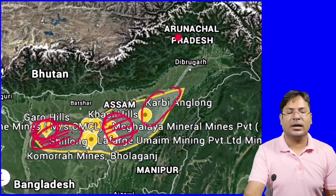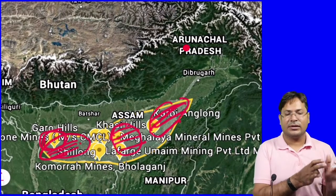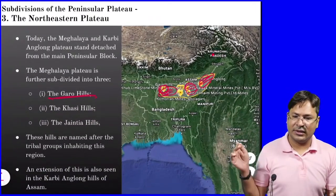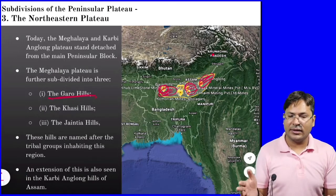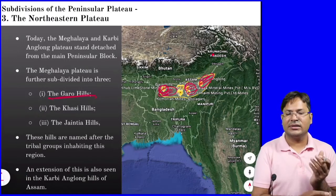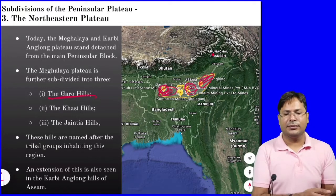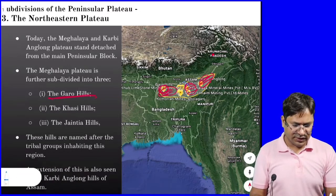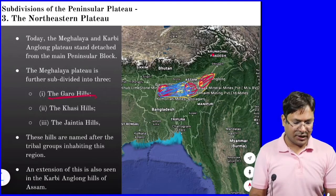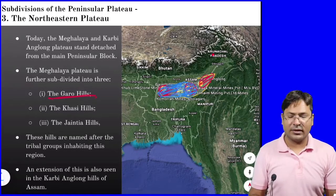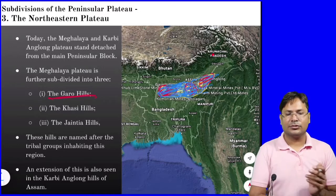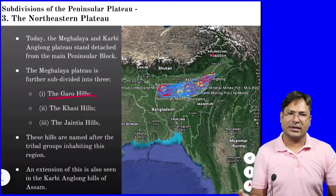This Plateau is mainly covered by three hills: in the west the Garo Hills, in the center the Khasi Hills, and in the east the Jaintia Hills. The plateau covers two states — Meghalaya and Assam. The Karbi Anglong is a district name in Assam, and this plateau covers both states.